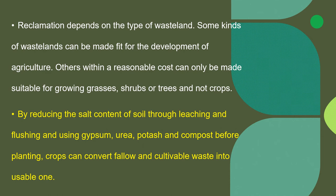Reclamation includes reducing the salt content of soil through leaching, using chemicals such as gypsum, urea, and potassium before planting to convert infertile land into fertile, cultivable land.